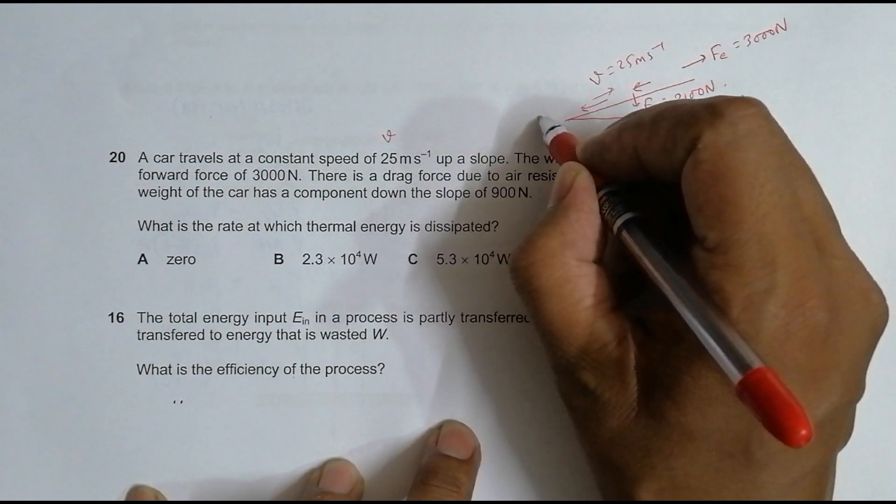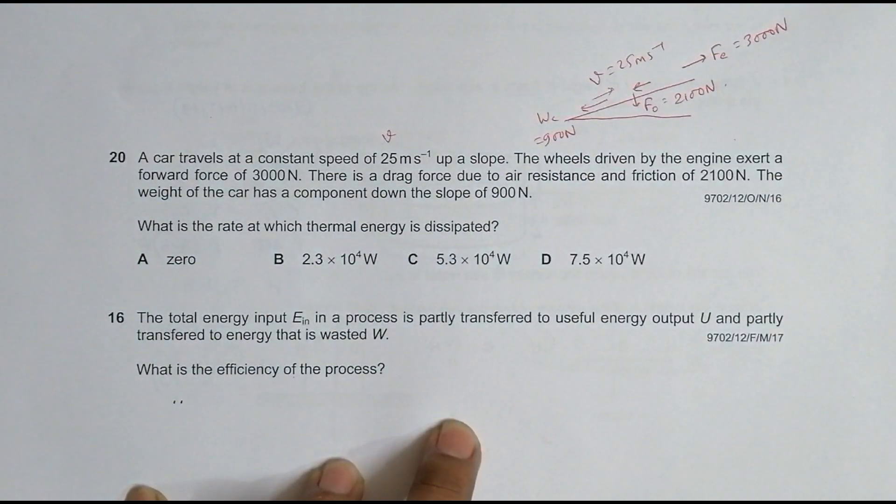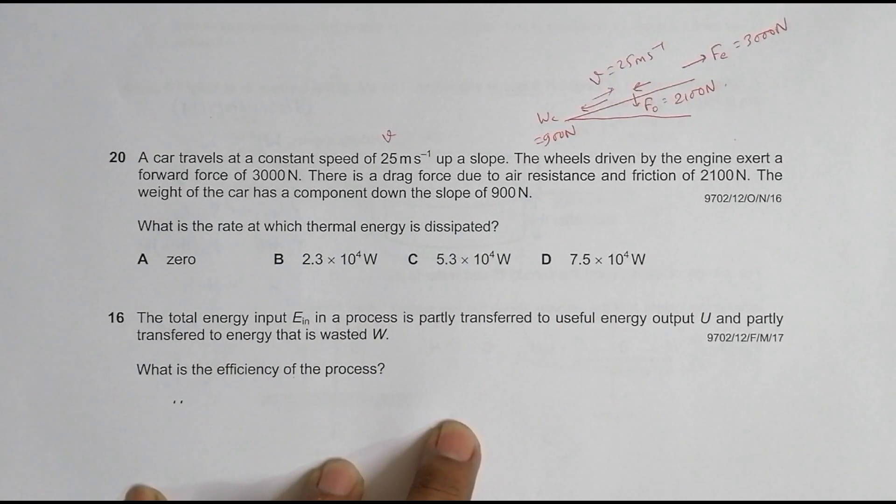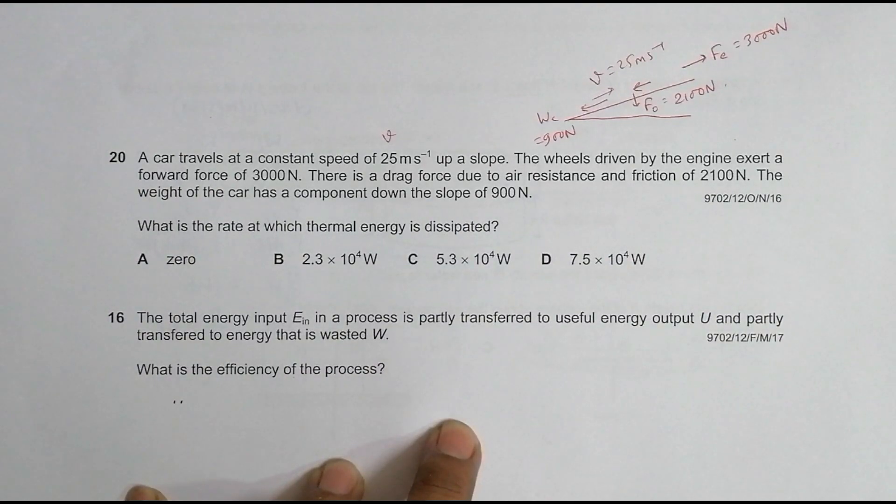So what's the rate at which the thermal energy is dissipated? So we have to find the rate of production of thermal energy. One thing to remember is that the thermal energy, or the heat energy, or the wasted energy, is due to the air resistance and friction.